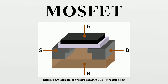The term enhancement mode refers to the increase of conductivity with increase in oxide field that adds carriers to the channel, also referred to as the inversion layer. The channel can contain electrons or holes, opposite in type to the substrate, so NMOS is made with a P-type substrate and PMOS with an N-type substrate. In the less common depletion mode MOSFET, the channel consists of carriers in a surface impurity layer of opposite type to the substrate, and conductivity is decreased by application of a field that depletes carriers from this surface layer.